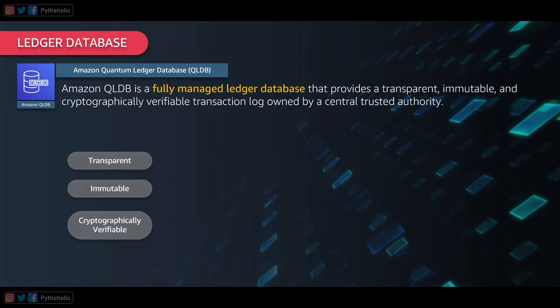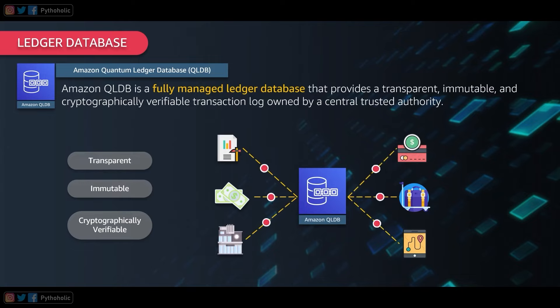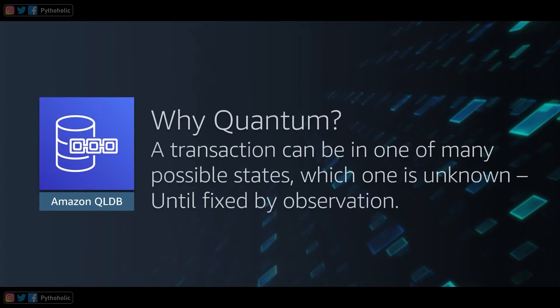Amazon QLDB is a fully managed ledger database that provides a transparent, immutable, and cryptographically verifiable transaction log owned by a central trusted authority. Transparent means we can audit and find the sequence of the transaction and its history. Immutable means the data cannot be changed. Cryptographically verifiable means a hashing algorithm is used to verify each transaction. QLDB isn't only for banking — it also covers insurance, manufacturing inventory, finances, and even a simple car seller portal.